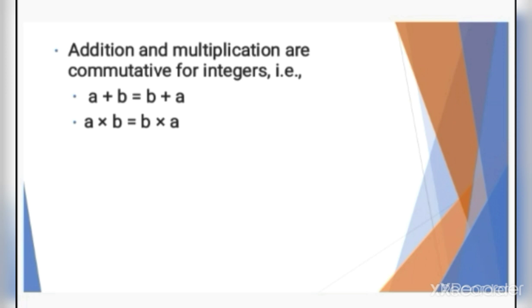A into B equals B into A — that means we can multiply 2 integers in any order and get the same result. For example, 10 into 3 or 3 into 10: in both ways, we get the same answer, 30.